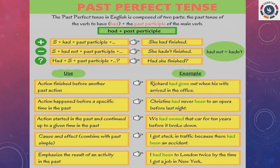And to give importance to the result of an activity in the past, past perfect is also used. For example, 'I had been in London twice by the time I got a job in New York.' Is it clear?